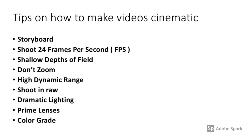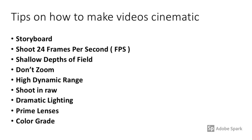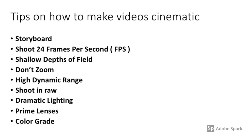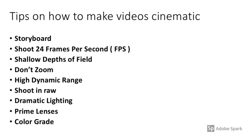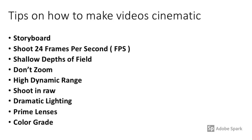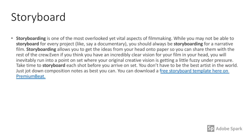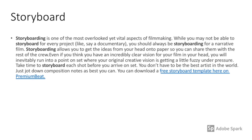This next slide has nine tips on how to make your video cinematic. For the sake of time, I'm not going to go into every detail on all of them, but here are the nine tips: one — storyboard; two — shoot 24 frames per second; three — shallow depth of field; four — don't zoom; five — high dynamic range; six — shoot in raw; seven — dramatic lighting; eight — prime lenses; and nine — color grade.